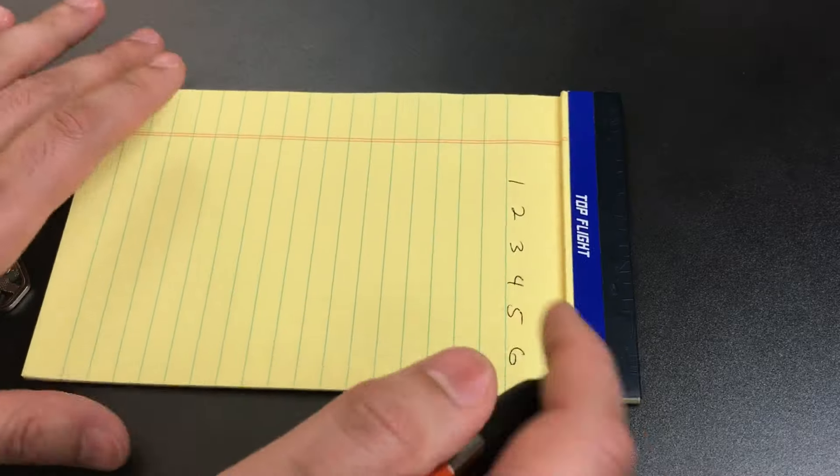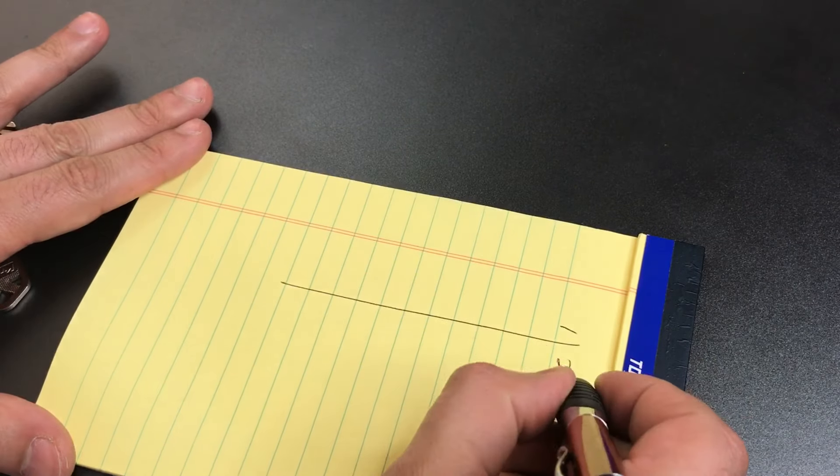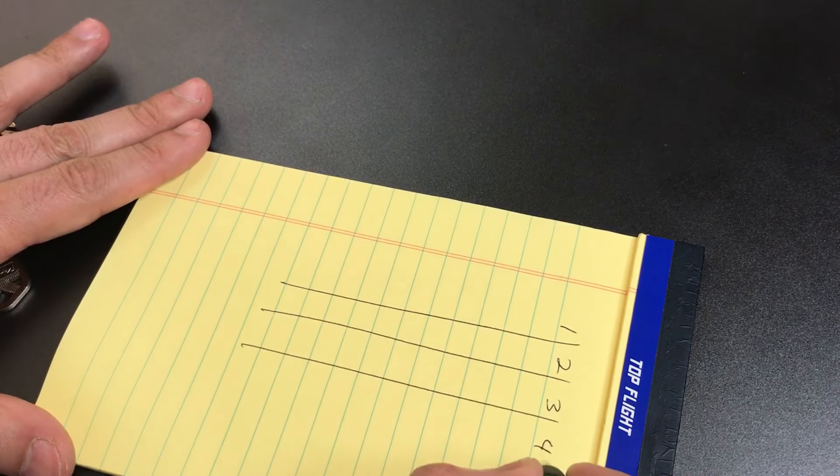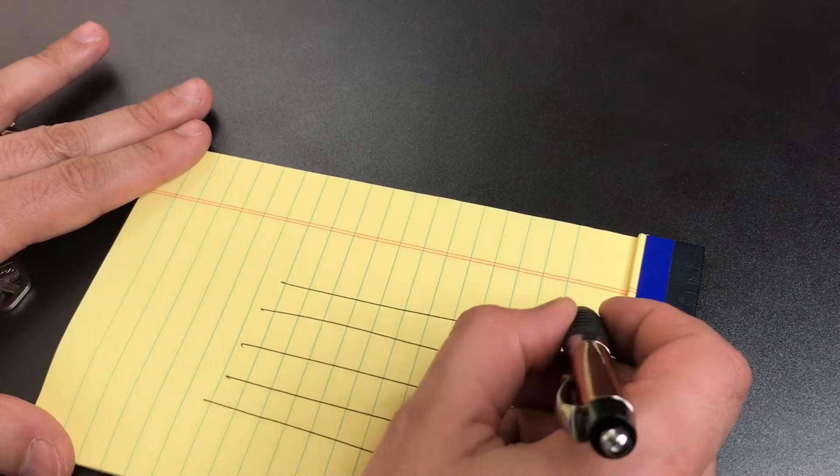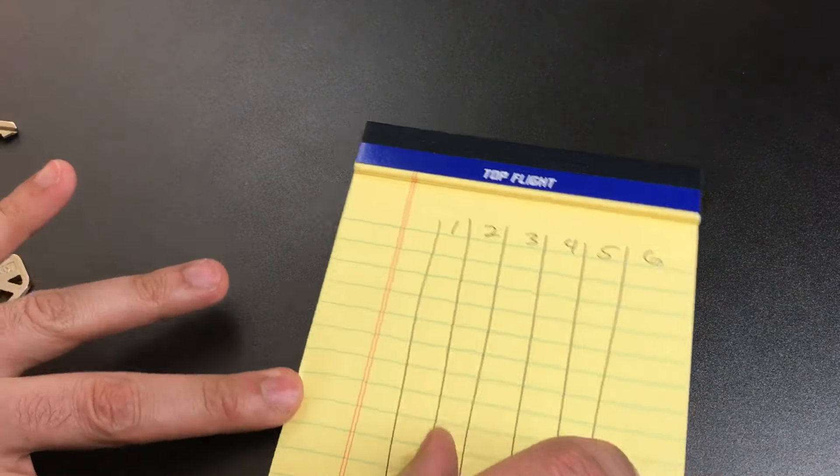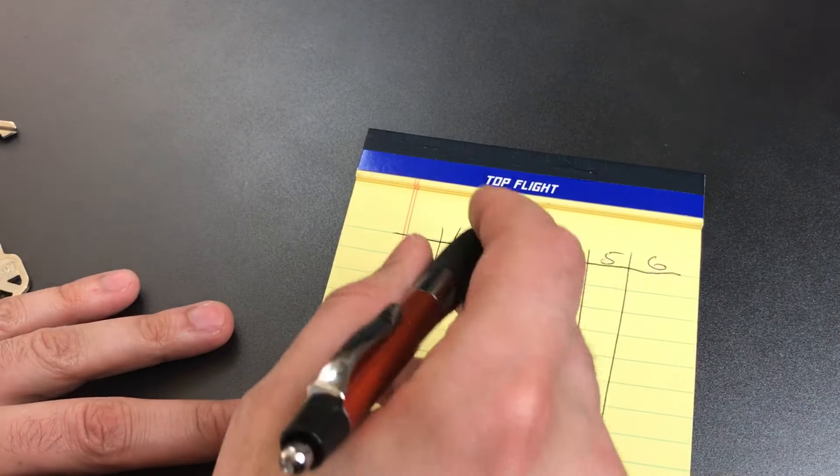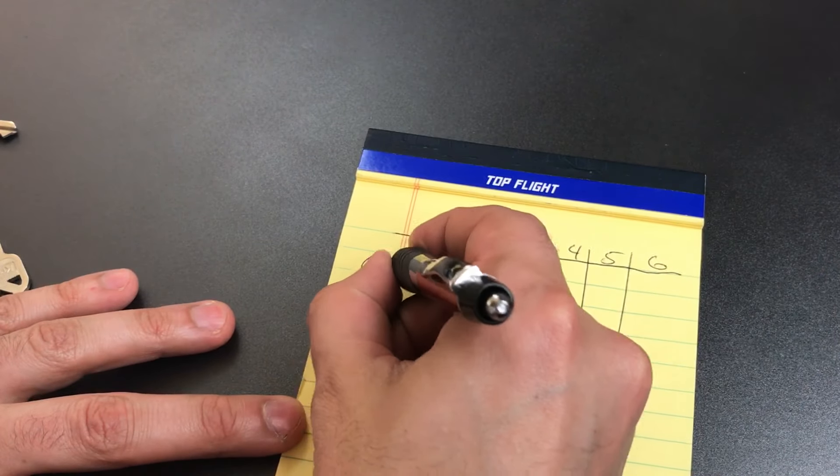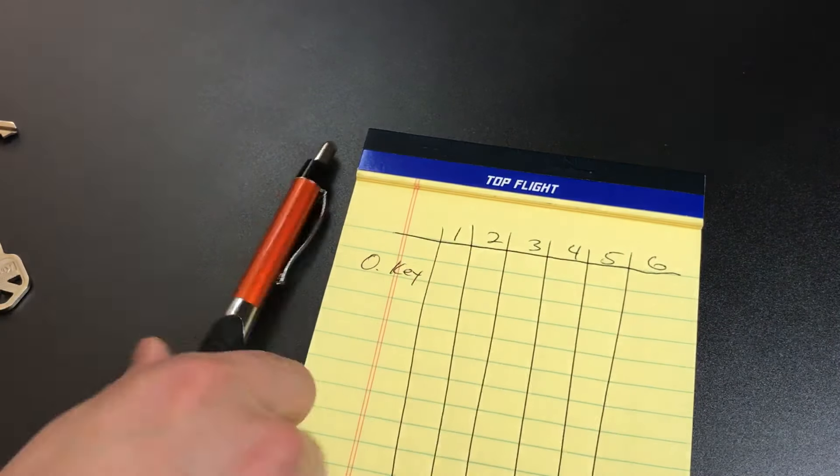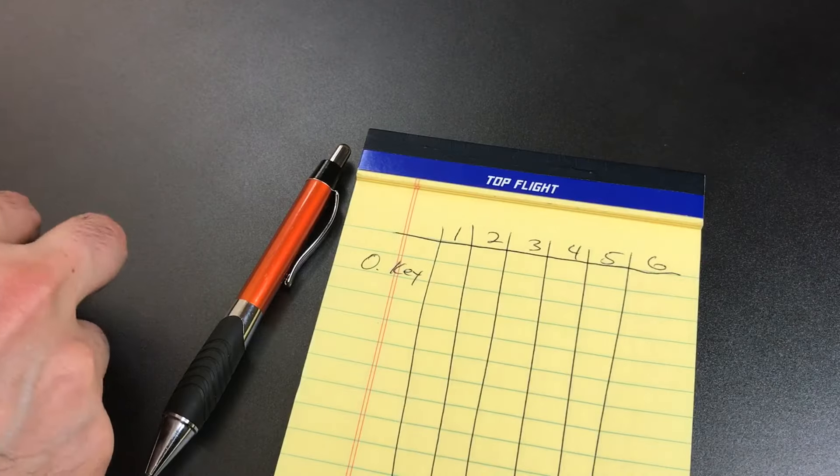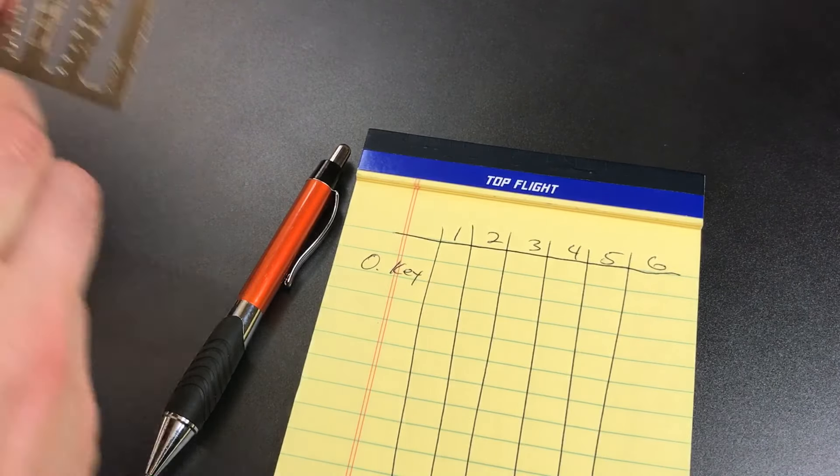We have six pin chambers, so we're going to make six columns, and the first column will be the cuts for the old key. And let's measure them right now.